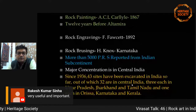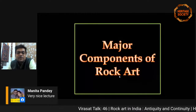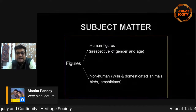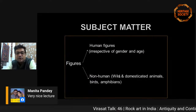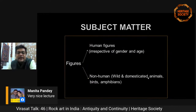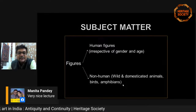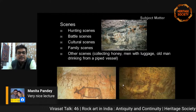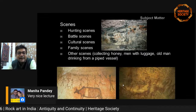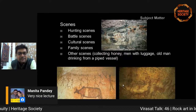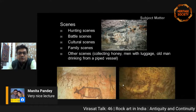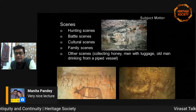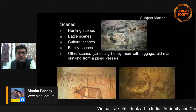The major components of rock art: subject matter usually includes human figures (irrespective of gender and age) and non-human forms, depicted through wild and domesticated animals, birds, amphibians, etc. Common scenes include hunting scenes, battle scenes, cultural scenes, family scenes, and others depicting collecting honey, men with luggage, an old man drinking from a pipe vessel, etc. These are numerous scenes found through different rock art in different parts of the country — the figures shown here are from Bhimbetka.